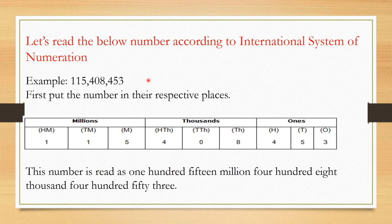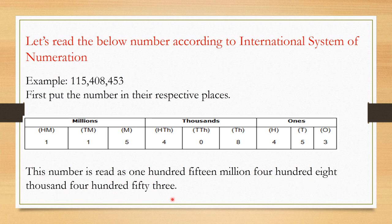So we can see: ones place — 3, tens — 5, hundreds — 4, thousands — 8, ten thousands — 0, hundred thousands — 4, millions — 5, ten millions — 1, hundred millions — 1. This number is read as one hundred fifteen million, four hundred eight thousand, four hundred fifty-three.